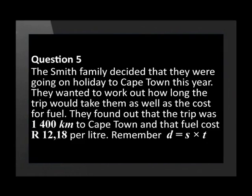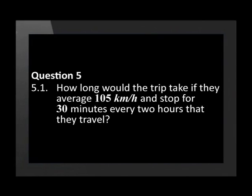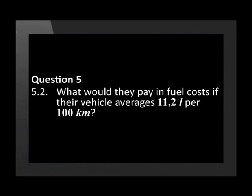Question five asks us to use the distance formula. The Smith family decide to go on holiday to Cape Town. The trip is 1,400 kilometers and fuel costs 12 rand 18 per litre. Remember distance equals speed times time. How long would the trip take if they averaged 105 kilometers per hour and stopped for 30 minutes every two hours? What would they pay in fuel costs if their vehicle averages 11.2 litres per 100 kilometers?